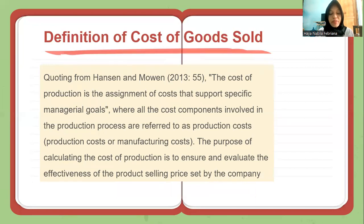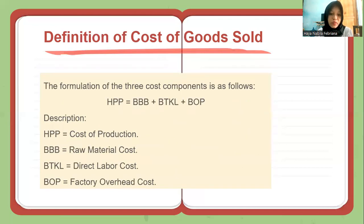Moving to the definition of cost of goods sold. Quoting from Hansen and Mowen, the cost of production is the assignment of costs that support specific managerial goals, where all cost components involved in the production process are referred to as manufacturing costs. The purpose of calculating the cost of production is to ensure and evaluate the effectiveness of the product selling price set by the company. The formula is: HPP = BBB + PTKL + BOP, where HPP is cost of production, BBB is raw material cost, PTKL is direct labor cost, and BOP is factory overhead cost.